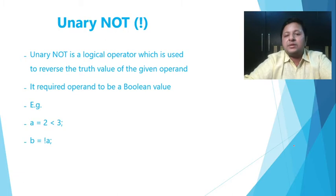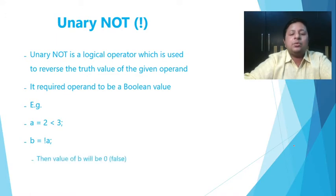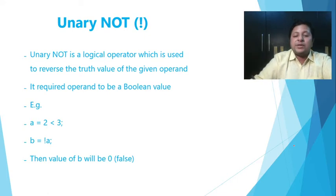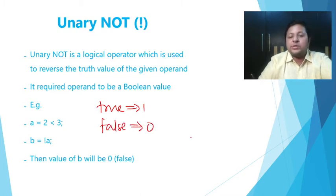So let's look at the example. So a is 2 less than 3. So what's the value of a? Obviously 2 less than 3 is true. So value of a is true. When I say b equal to NOT a, obviously NOT of a, which is NOT of true, is going to be false. So ideally the value that would be there with b should be false. Now how do I represent true and false? Which also we had already seen. So true is represented as 1 and false is represented as 0. And that's how the notions are being used.